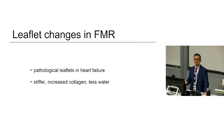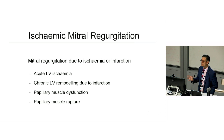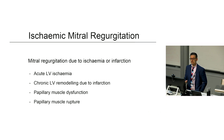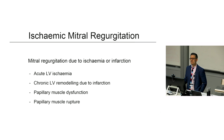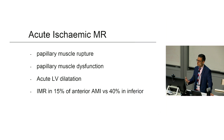Ischemic mitral regurgitation is defined as MR due to ischemia or infarction. There can be acute LV ischemia, chronic LV remodeling due to infarction, and papillary muscle dysfunction and rupture — less common but obviously serious causes. Acute MR causes include papillary muscle rupture, dysfunction, and acute LV dilatation.